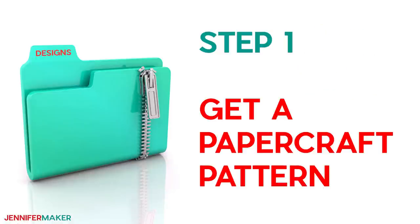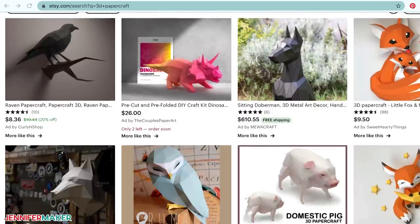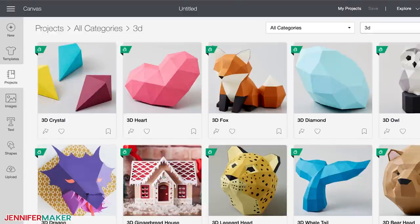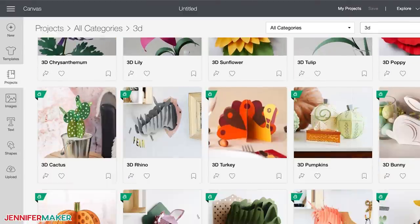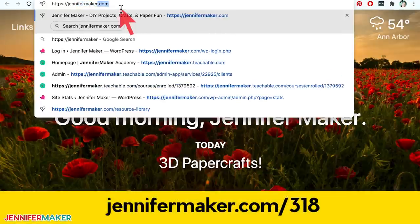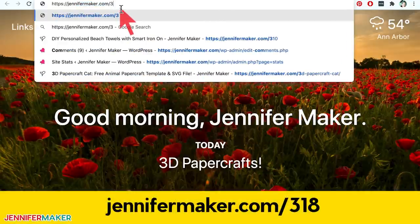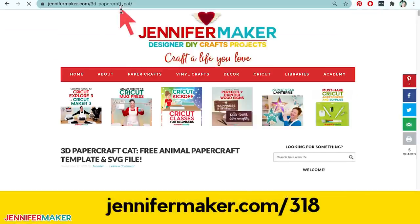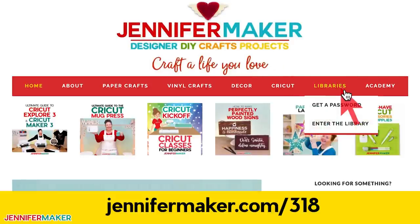Step one, get a paper craft pattern. You can buy paper craft patterns from places like Etsy and Cricut Design Space, but I recommend starting with a free pattern to see if this is something you enjoy first. And you can get our free 3D cat pattern from my blog. Go to jennifermaker.com slash 318 and look for libraries in the red bar at the top.